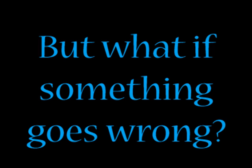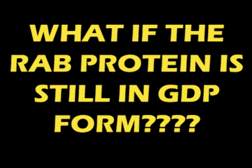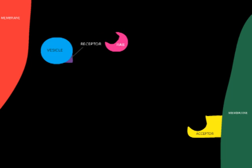But what if something goes wrong? What if the RAB protein is still in GDP form? The GDP form, also known as guanosine diphosphate, is the inactive state of the RAB proteins. If it is in this state, it will not bind to a vesicle. RAB proteins are only active in the GTP form, also known as guanosine triphosphate. Therefore, GDP cannot bind to the vesicle.